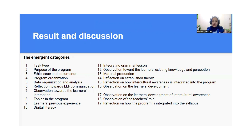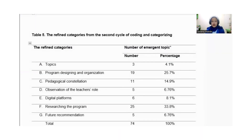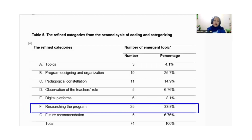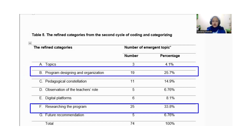From these emerging categories, I refined them into the second-cycle categories, starting from the topic to future recommendations. I also note there the number of original entries based on those themes. As we can see, 'researching the program' occupied the most entries, and the second most was 'program redesigning and organization.' We are going to discuss these a bit more deeply.